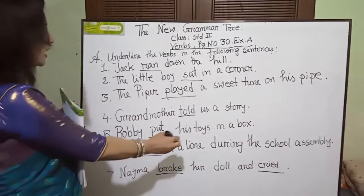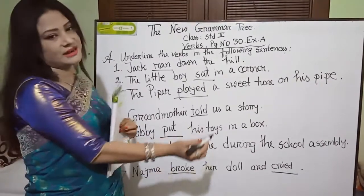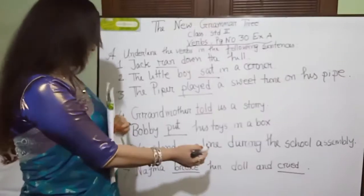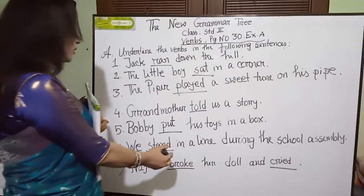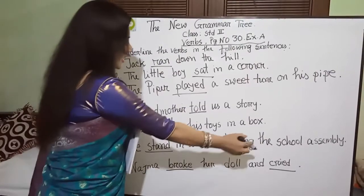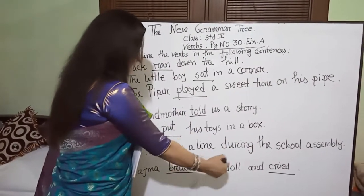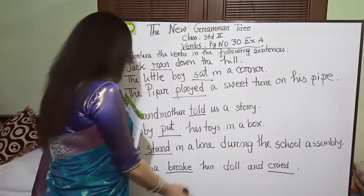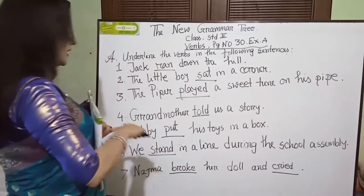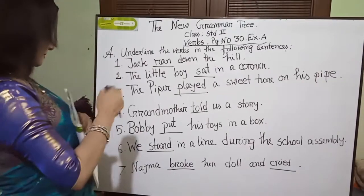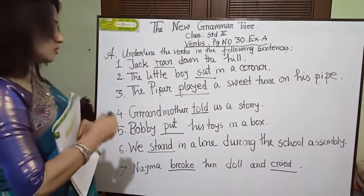Number 7: Nazma broke her doll and cried. So, 'broke' and 'cried' are verbs. These are doing verbs.